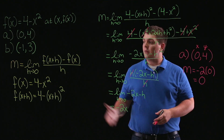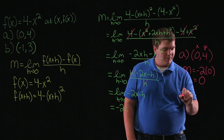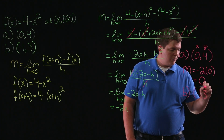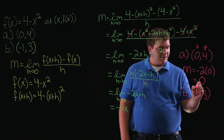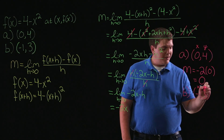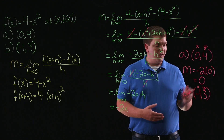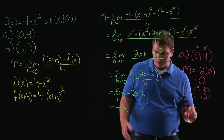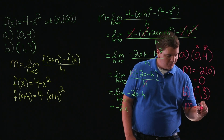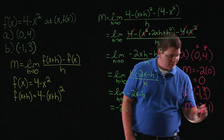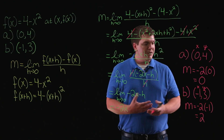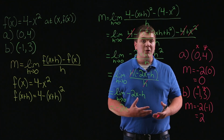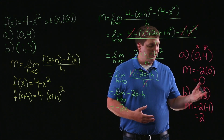For part b, we're looking for the slope at the point negative 1, 3. Remembering that this is our x value and this is our y value, we substitute negative 1 into our formula for slope: m is equal to negative 2 times negative 1, which is equal to 2. So the slope at the point 0, 4 is 0, and the slope of our graph at the point negative 1, 3 is 2.